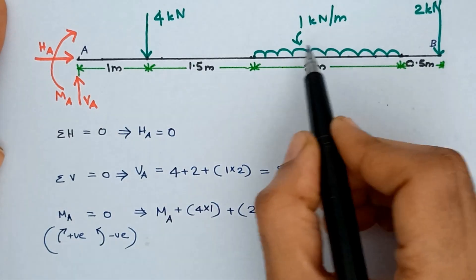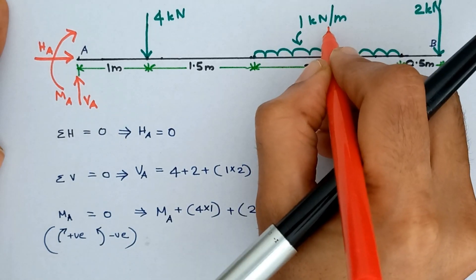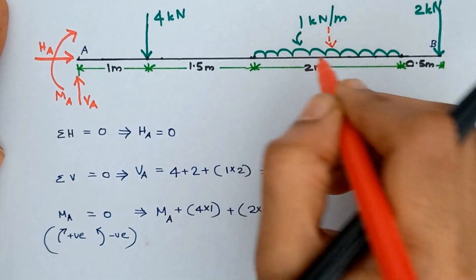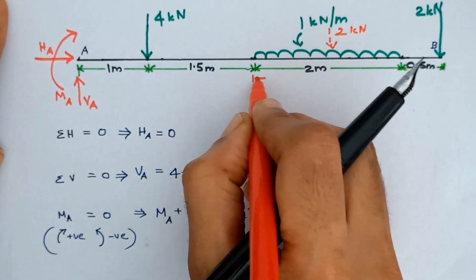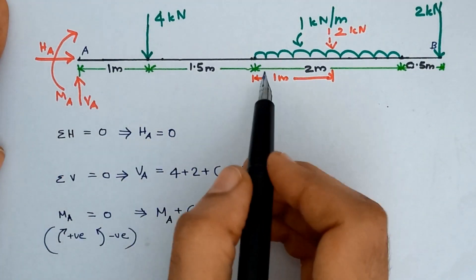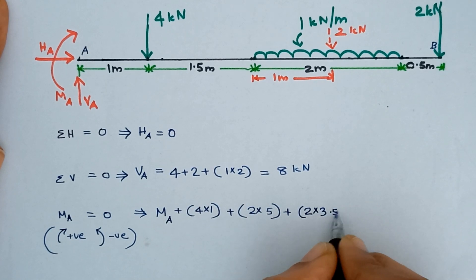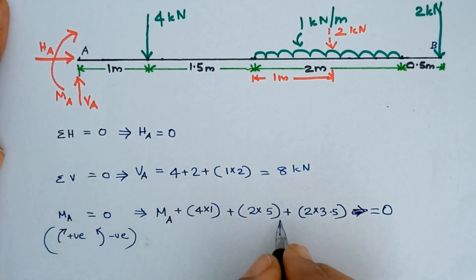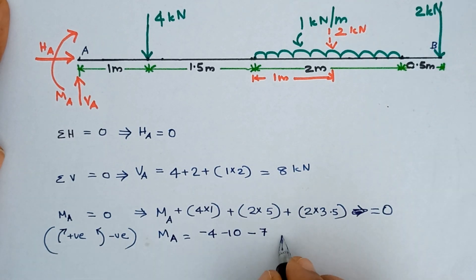The remaining one is the UDL. For calculating the moment, we have to consider this UDL as a point load acting at the center of its span. So we take it as a point load of magnitude 1 into 2, that is 2 kN. From here to here it is 1 meter — the center of the span over which it is acting — so the distance from point A to this point is 3.5 meters. This gives 2 into 3.5. Setting the sum equal to 0, we get MA = minus 4, minus 10, minus 7, equal to minus 21 kN·meter.